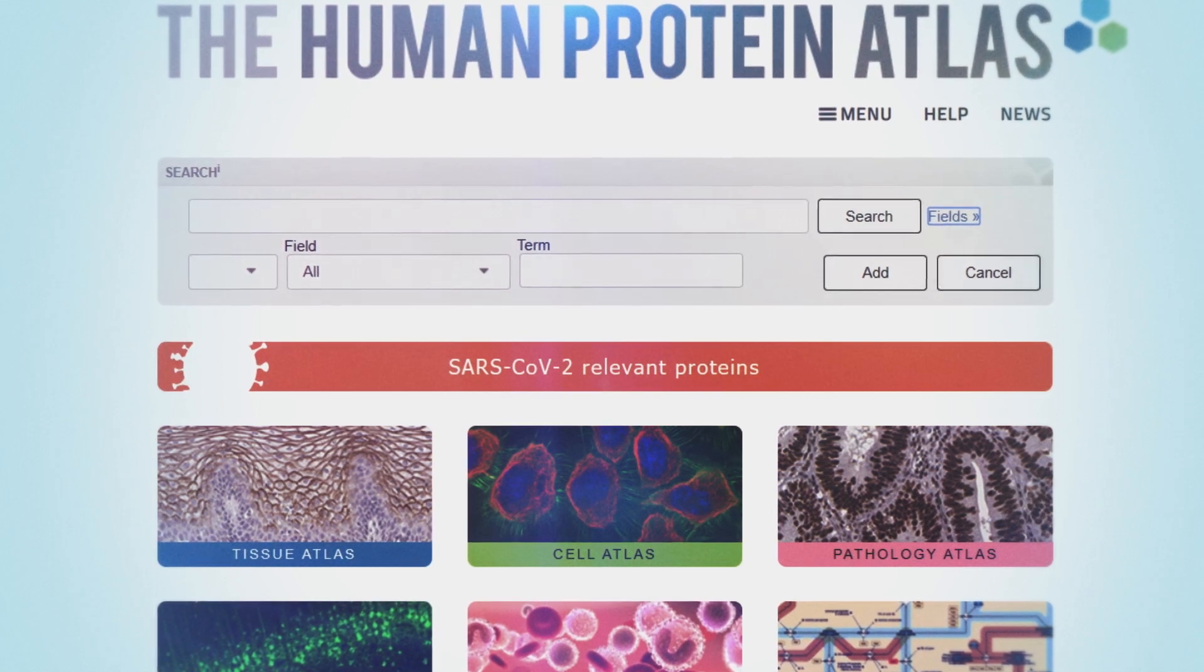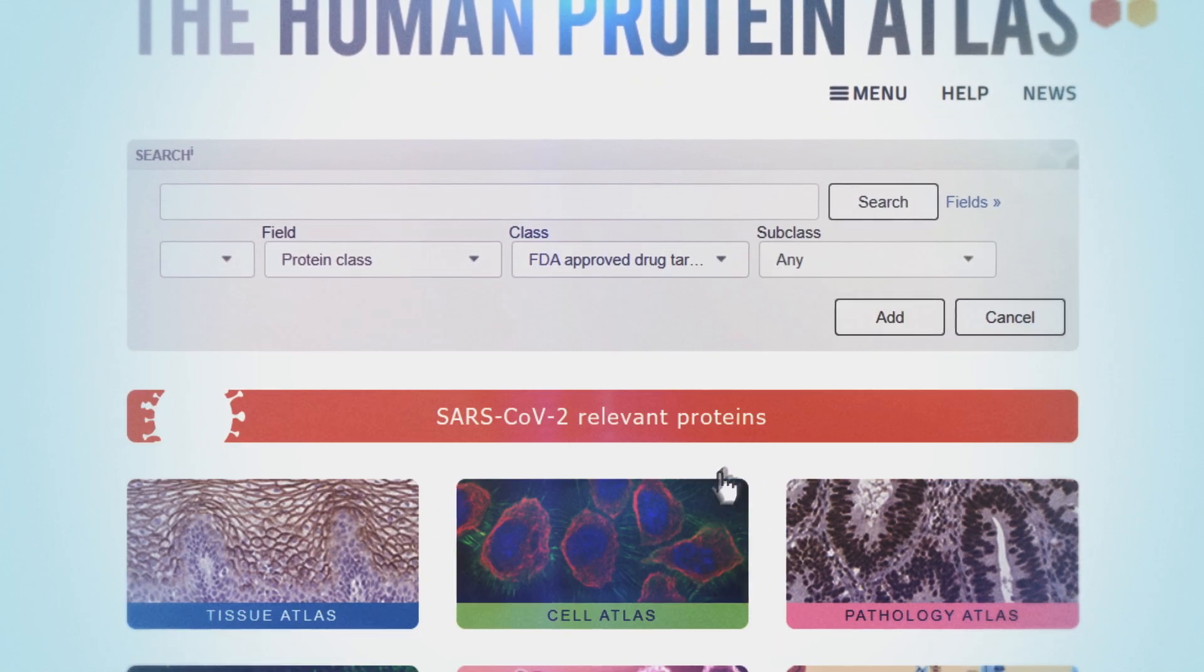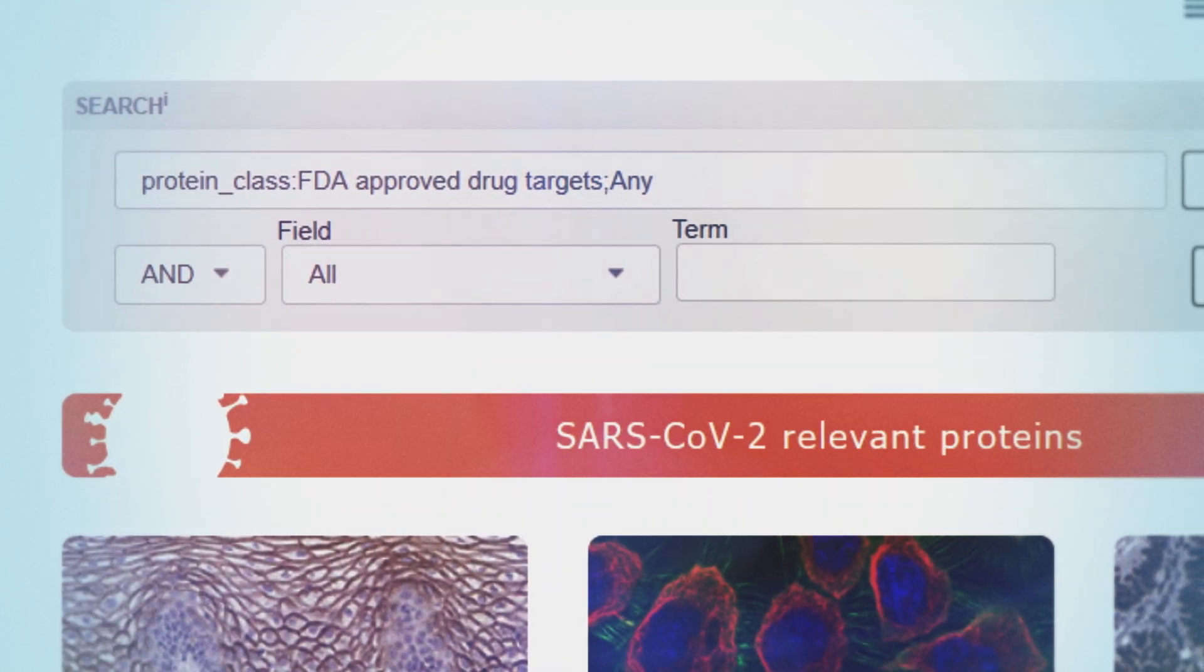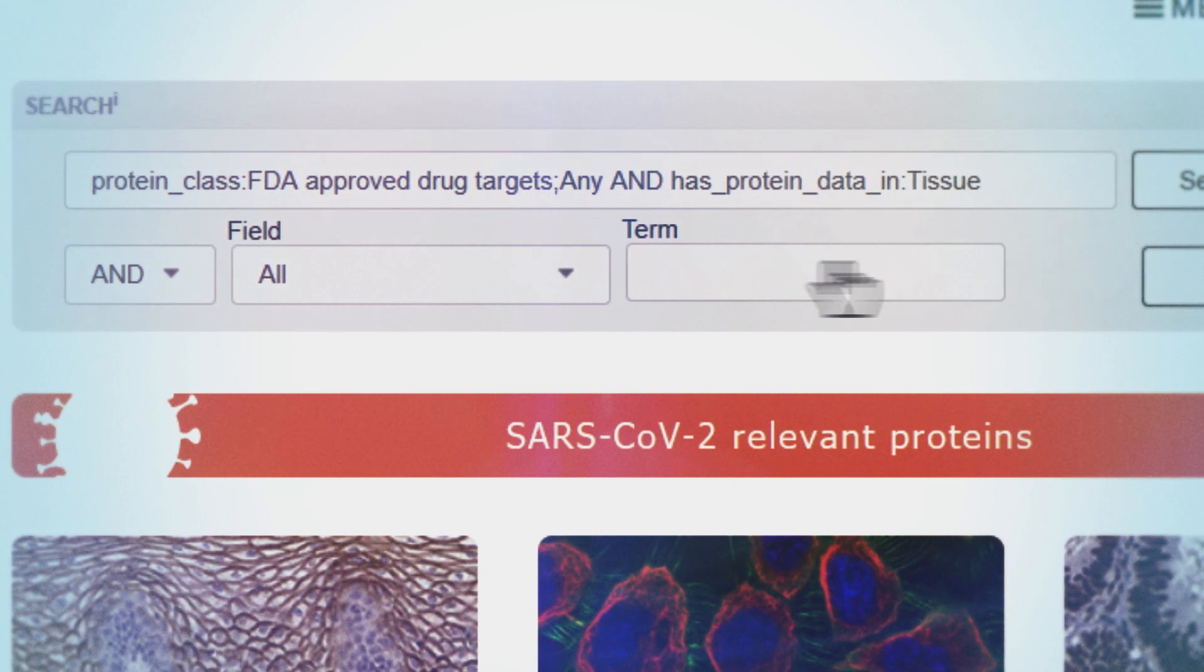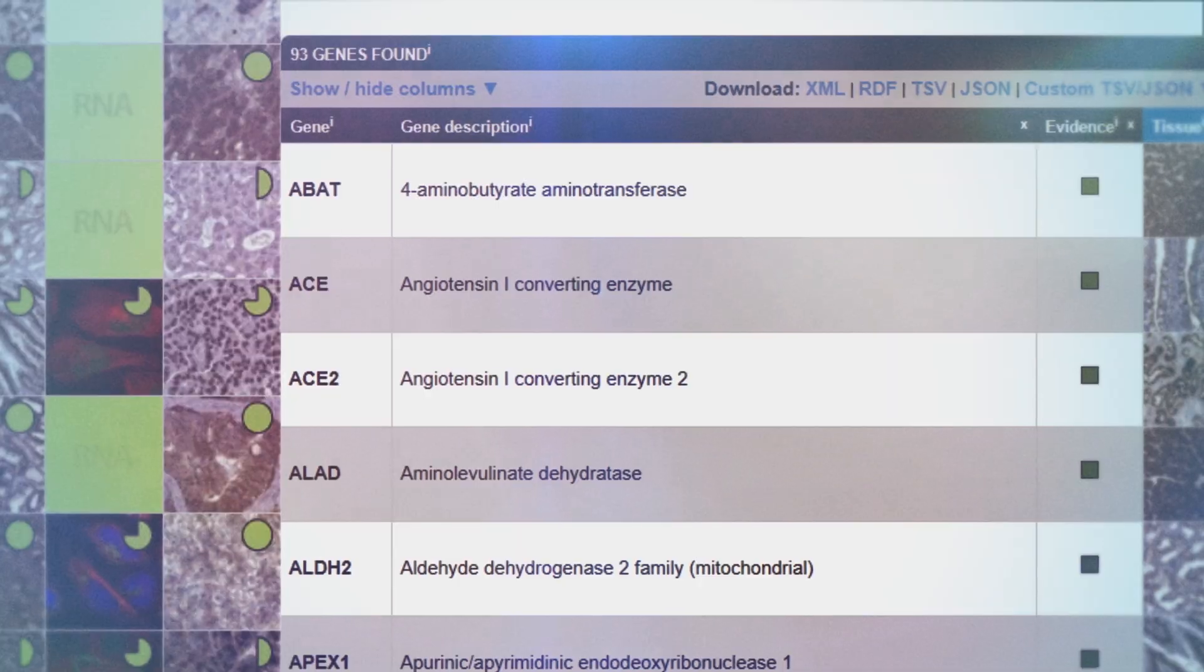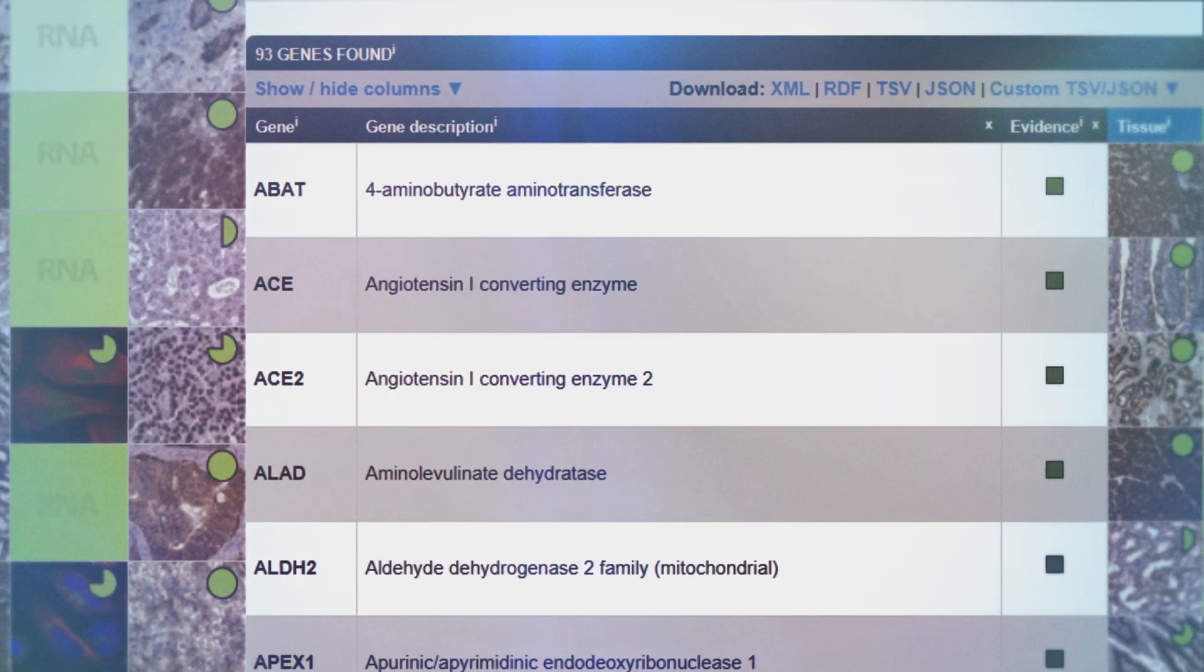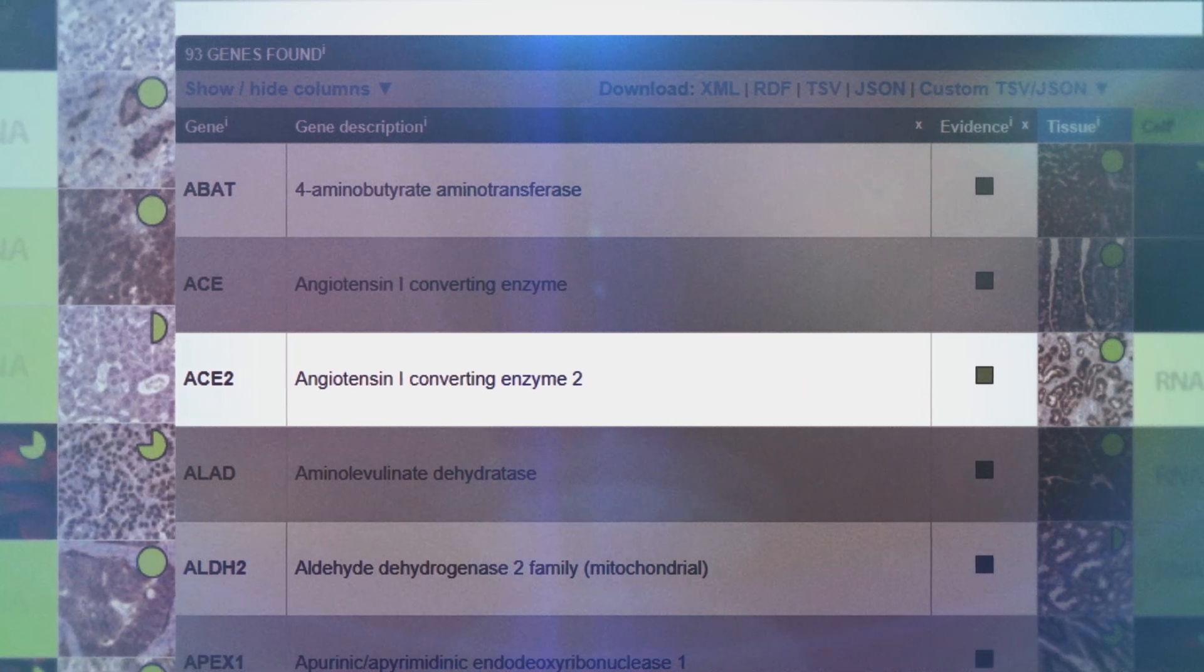The search function on the home page can also be used to make simple queries, like finding a protein by name, or more complex ones, like FDA-approved drug targets with data in the tissue atlas, and with high expression in a certain cell type in the kidney. This gives us 93 hits, with the third hit being the receptor for COVID-19.